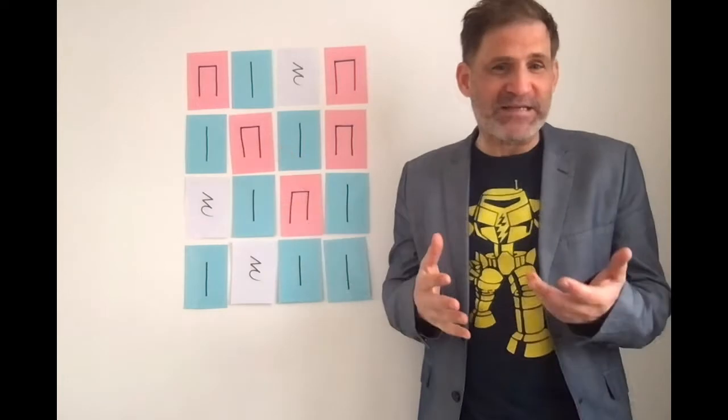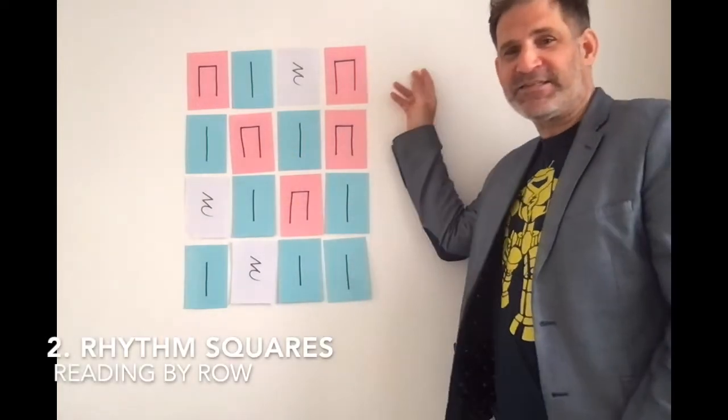Now, we can add a little bit of repetition with variety. I've tacked a grid of rhythms up here now, and there are different activities we can do just using this one grid. The first activity we can do with the grid is just read by row.